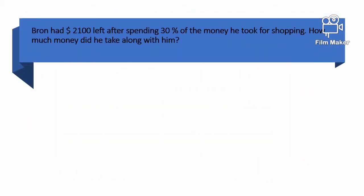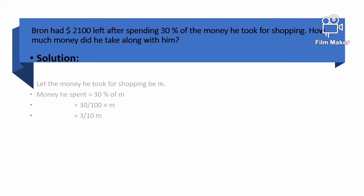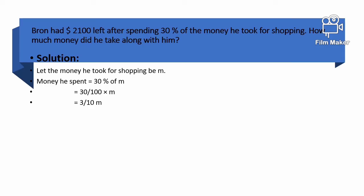Brown had $2,100 left after spending 30% of the money he took for shopping. How much money did he take along with him? Let the money he took for shopping be m. M is unknown. The money he spent is 30% of m.